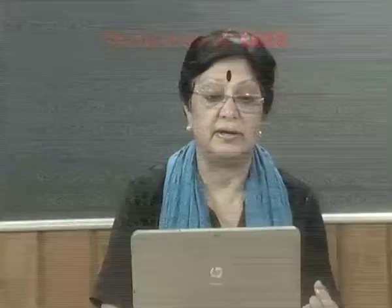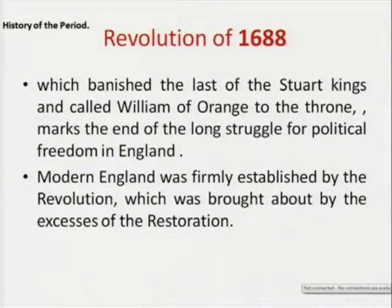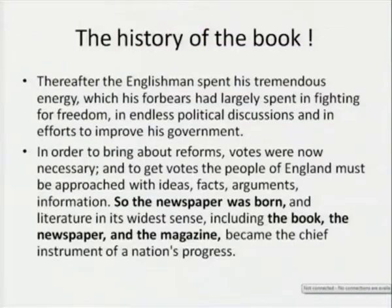If we look into the history of the period, the revolution of 1688 — which banished the last of the Stuart Kings and called William of Orange to the throne — marks the end of a long struggle for political freedom in England. Modern England was firmly established by the revolution, which was brought about by the excesses of the restoration. Most significant in studying this age was the history of the book. The Englishman spent tremendous energy — the cause of liberty and freedom which had been there from the Anglo-Saxon age to the Puritan age — largely spent in fighting for freedom, in endless political discussions, and in efforts to improve his government.